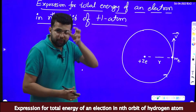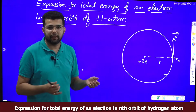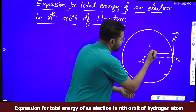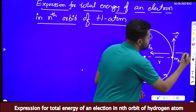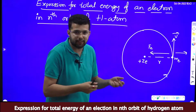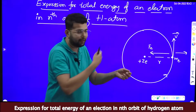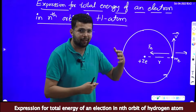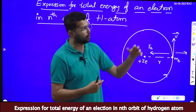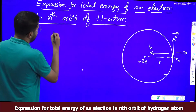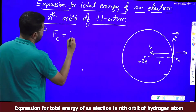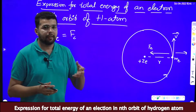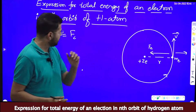For the electron to move in a circular orbit, the electrostatic force of attraction should be equal to the centripetal force. If the electrostatic force of attraction is more, the electron will finally fall into the nucleus. If the centrifugal reaction is more, the electron should fly off. So the condition is: electrostatic force of attraction should be equal to centripetal force — this is the condition for the electron to revolve around the nucleus in a circular orbit.